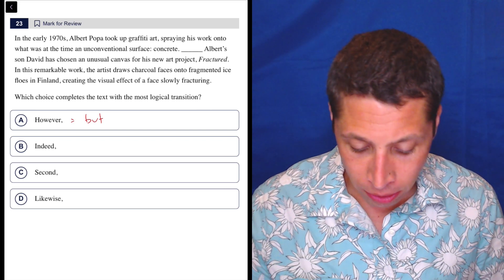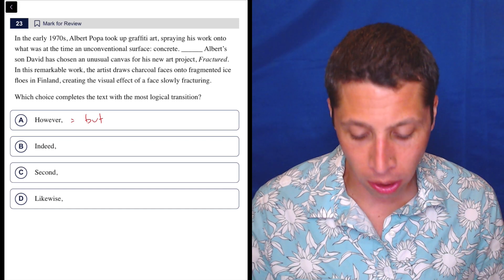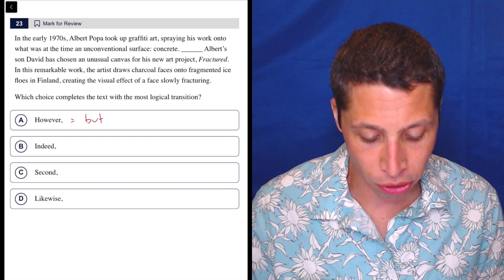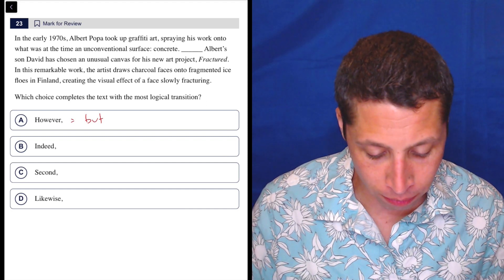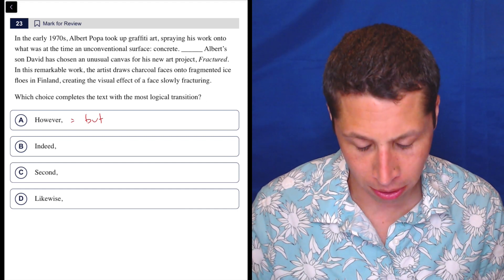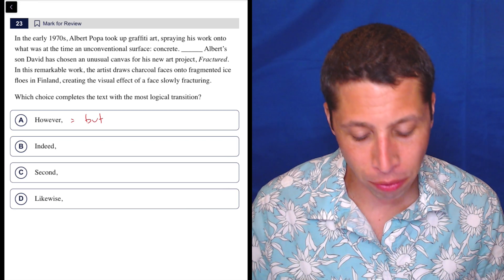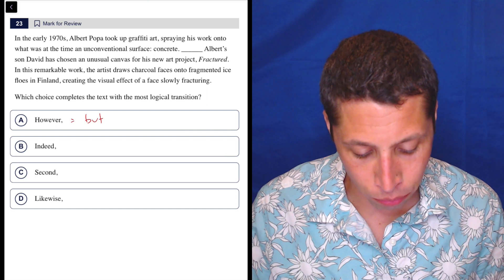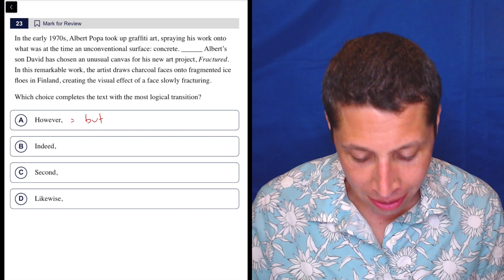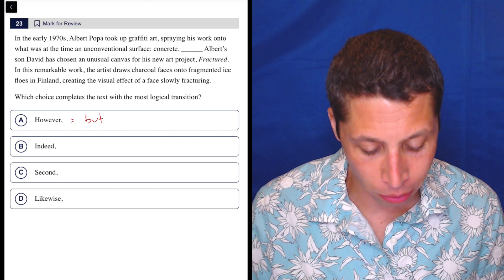In the early 1970s, Albert Papa took up graffiti art, spraying his work onto what was at the time an unconventional surface, concrete. Albert's son David has chosen an unusual canvas for his new art project, Fractured. Wait, what? How did we go from this guy to his son? That seems odd. In this remarkable work, the artist draws charcoal faces onto fragmented ice flows in Finland, creating the visual effect of a face slowly fracturing.